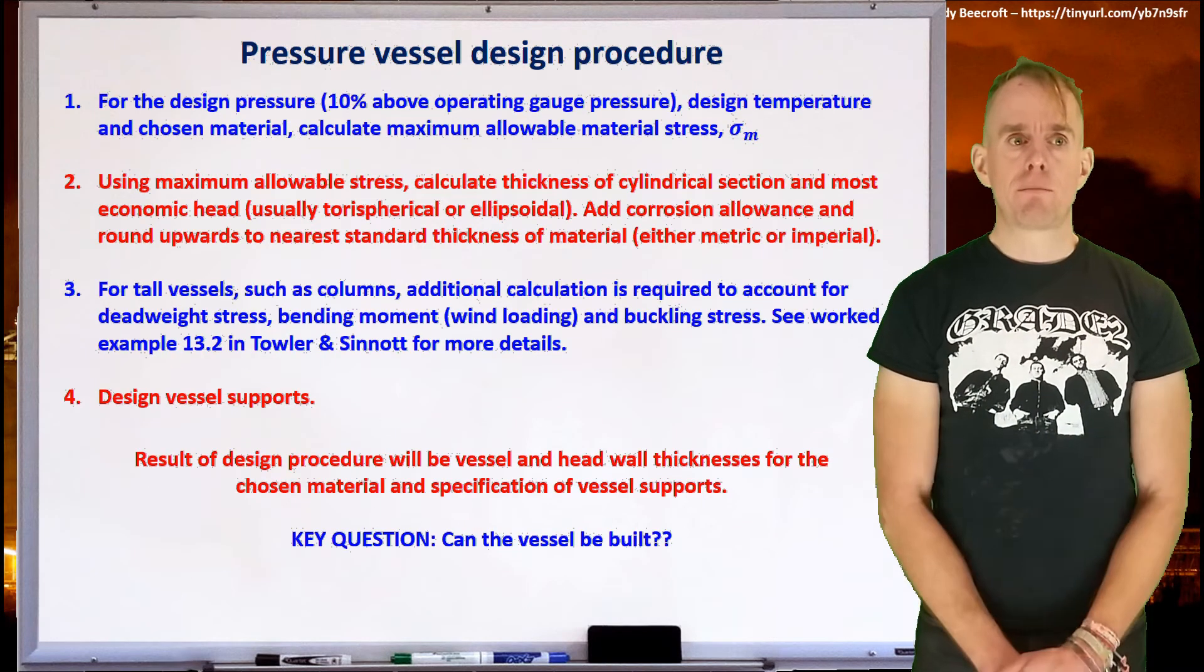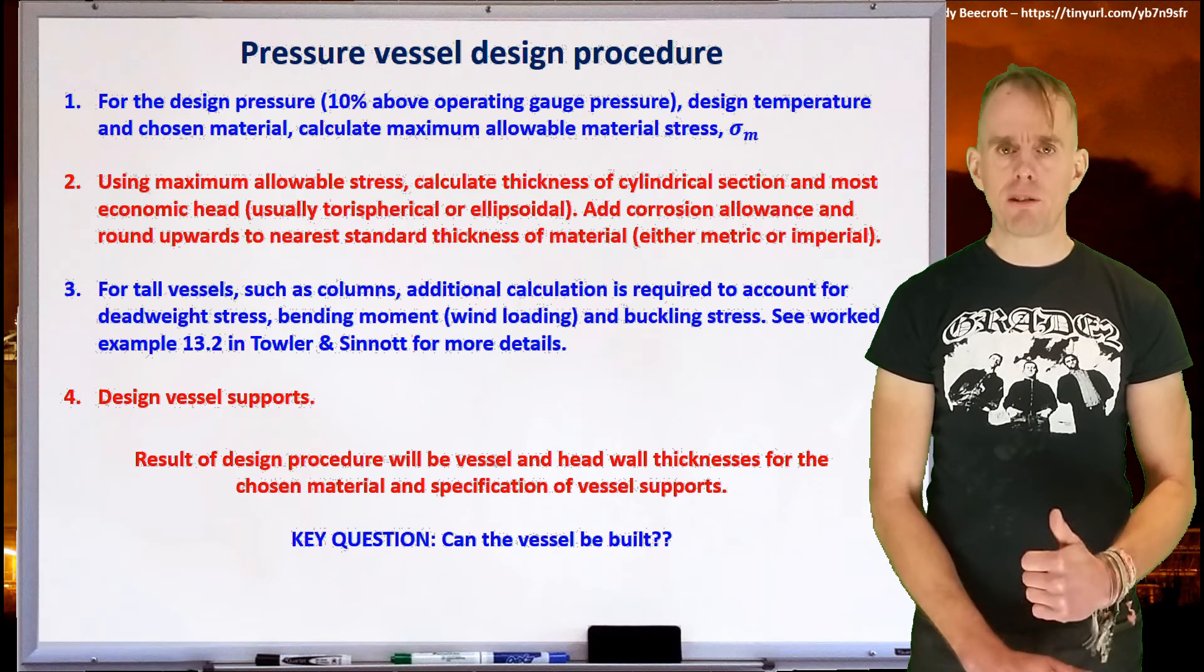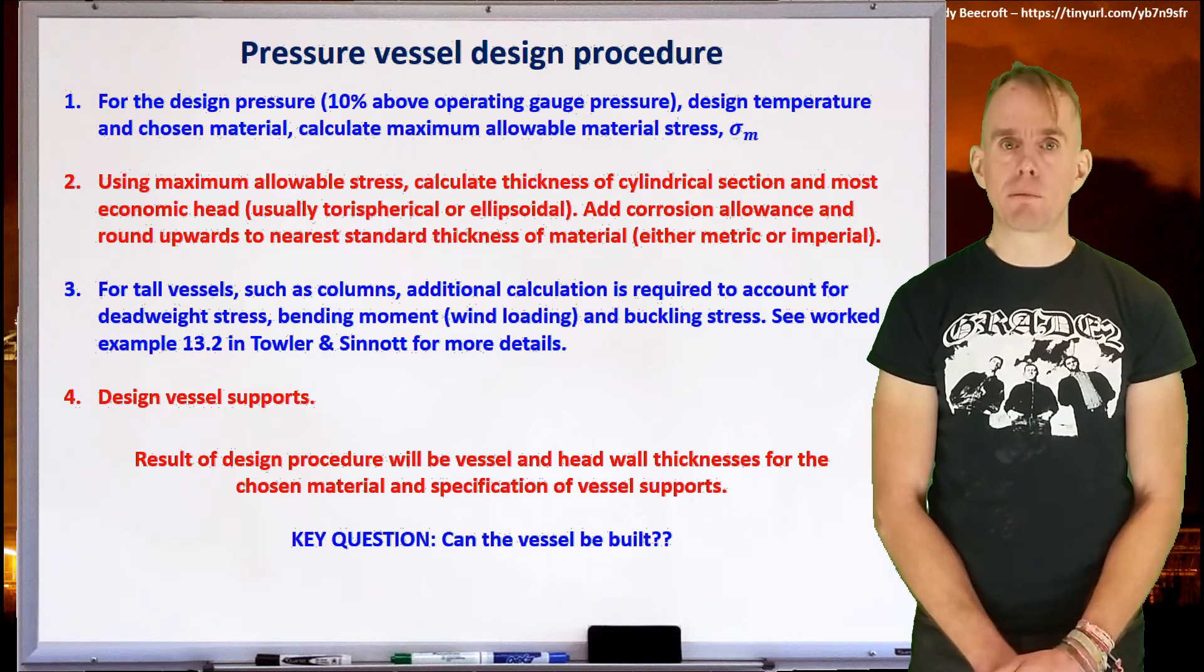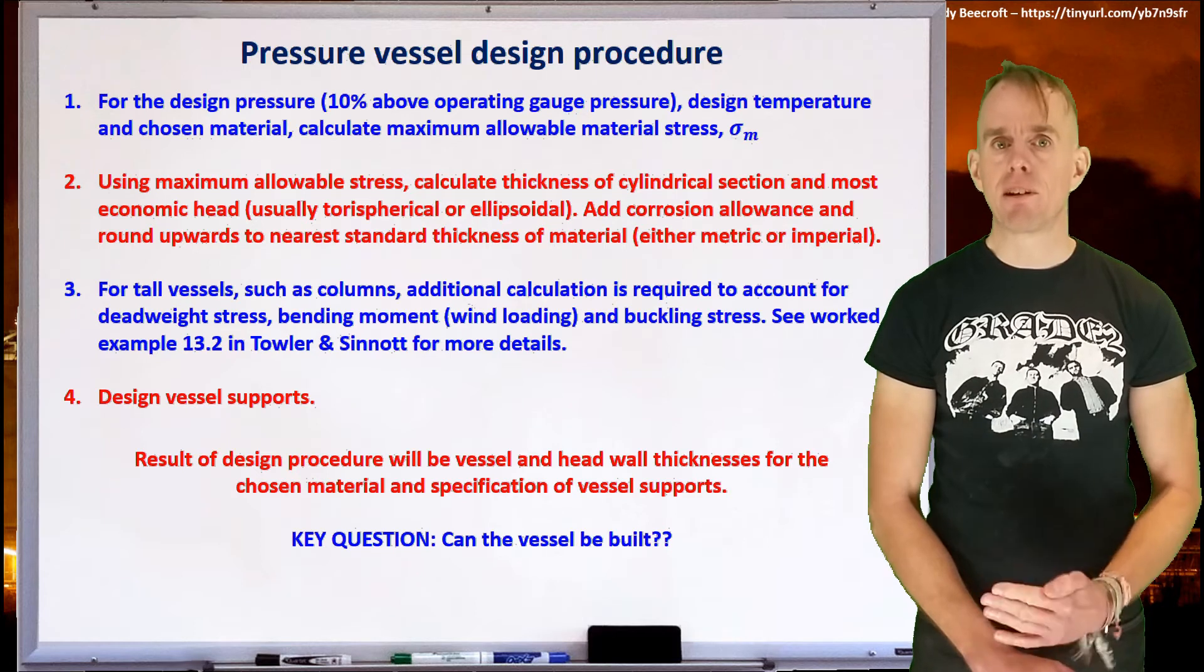So, there's some examples of vessel supports. And so by the end of this design procedure, hopefully what you've got is a vessel with a wall thickness, a head thickness, chosen material and a specification of vessel supports. Your next question to answer is, can this vessel be built?